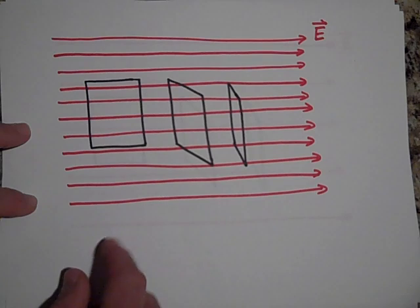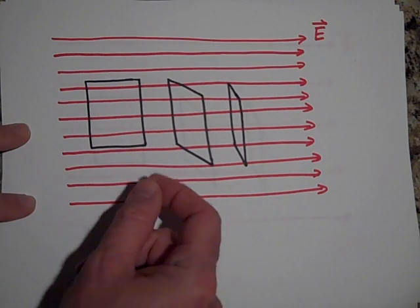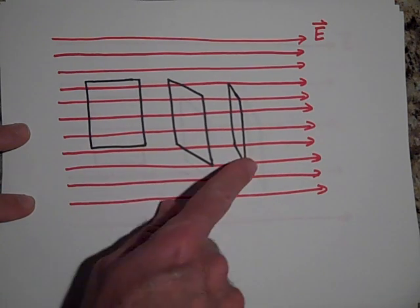If you think of the electric field as being the red lines, if I put a positive test charge there it would move to the right.